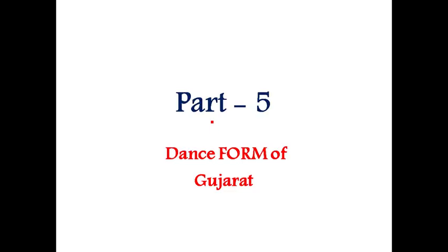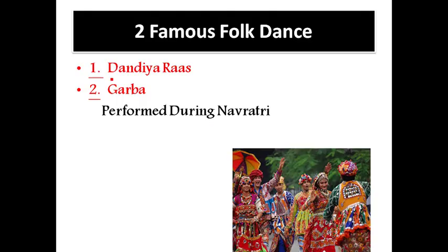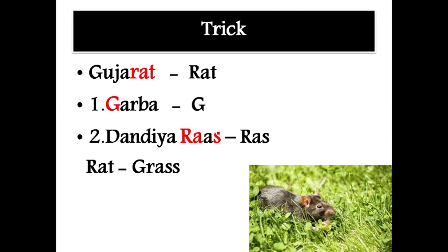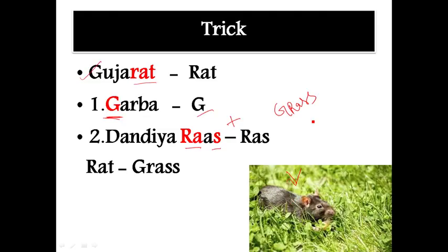Part 5: Dance forms of Gujarat. In Gujarat there are two important dances: Dandiya Ras and Garba, both performed during Navaratri. The trick: Gujarat ends in 'rat'; Garba starts with G; Dandiya Ras ends in 'ras'. G + ras = 'grass'. So remember: a rat eating grass. Rat = Gujarat, G = Garba, Ras = Dandiya Ras.